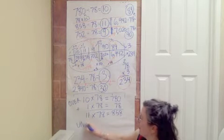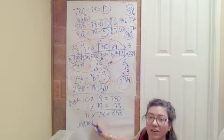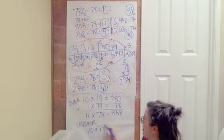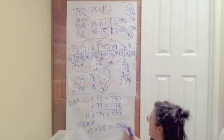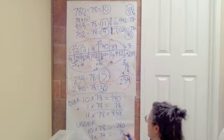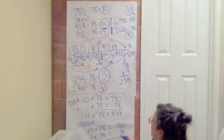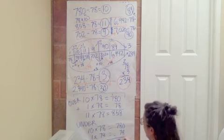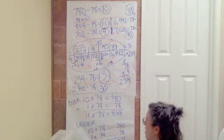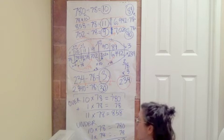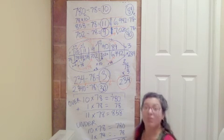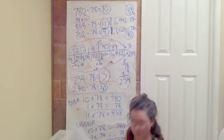The under strategy. Under. Same idea, just a little different, right? Someone might write 10 times 78 equals 780 minus 1 times 78 equals 78. And we already did this work, right? We discovered that 702 is the answer because that would be 10 minus 1 is 9 times 78 equals 702. So just something to think about as you're working with these. Okay.